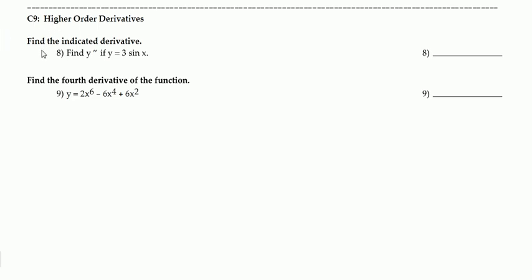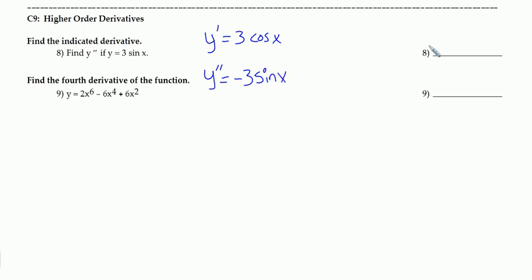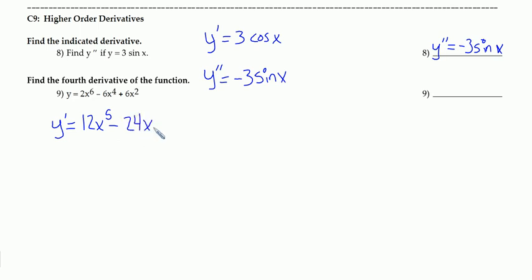Concept 9, higher order derivatives. On number 8, they want the second derivative of y equals 3 sine x. The first derivative: the derivative of 3 sine x is 3 cosine x. The second derivative is the derivative of that — the derivative of cosine x is negative sine x, so 3 times negative sine gives negative 3 sine x. For number 9, we need the 4th derivative. The first derivative: 2 times 6 is 12x to the 5th, minus 6 times 4 is 24x to the 3rd, plus 6 times 2 is 12x.